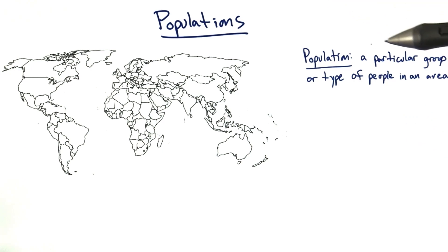For example, a population is a particular group or type of people in an area. So, although there are many ways to identify a population, a common metric is geography, as you can see here with a map of the world.